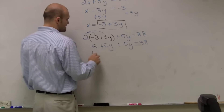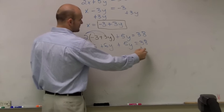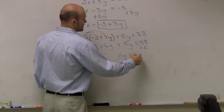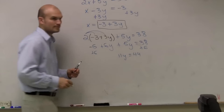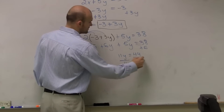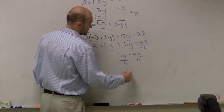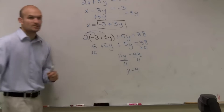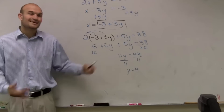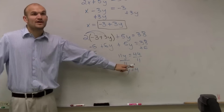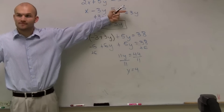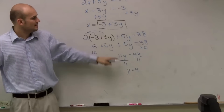When I add 6 to the other side, I get 11y equals 44. Dividing by 11, y is going to equal 4. Now I know what my value of y is, and I can plug that back into my equation to find the value of x.